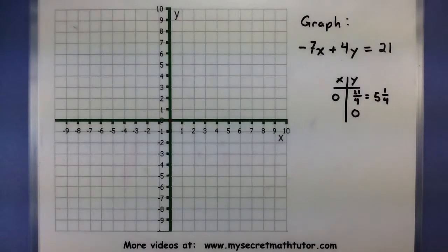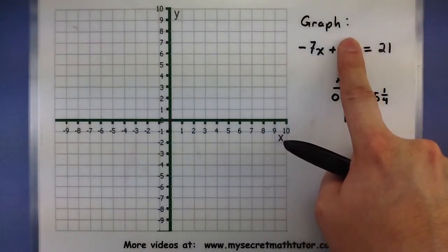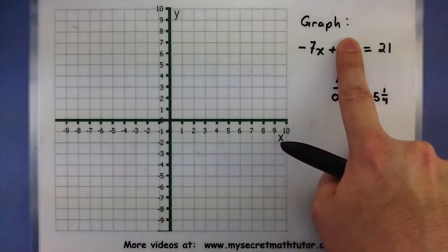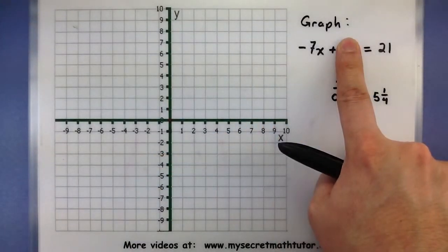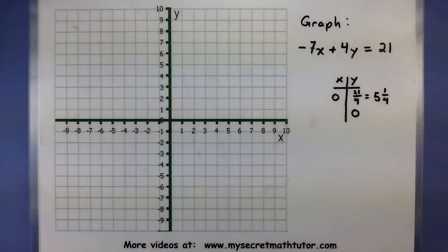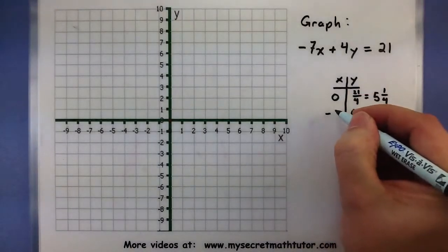Alright, let's get our second point. When y equals 0, looks like x must be a negative 3. Because a negative times a negative would equal a positive. That's exactly what we have on the other side. Alright, so negative 3.